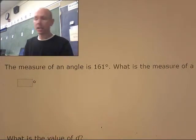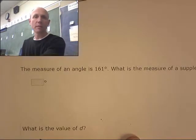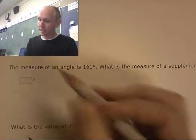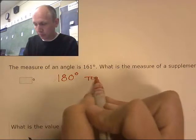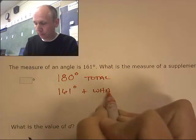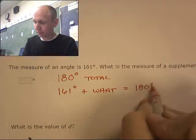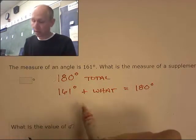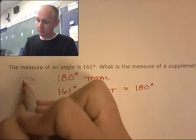The measure of an angle is 161 degrees. What is the measure of its supplementary angle? Well I know that supplements have to add up to 180 degrees. So 161 degrees plus what is going to be 180 degrees. If I add 10 to it, I'm up to 171. And if I add another 9, I'm up to 180. So I think it's 19 degrees. 19 degrees.